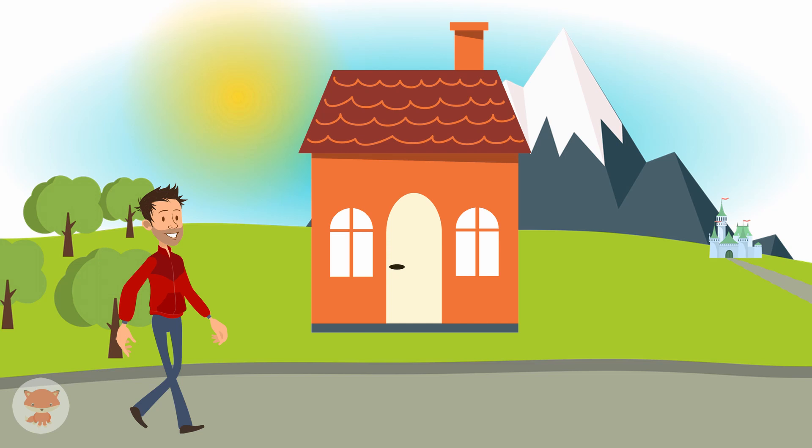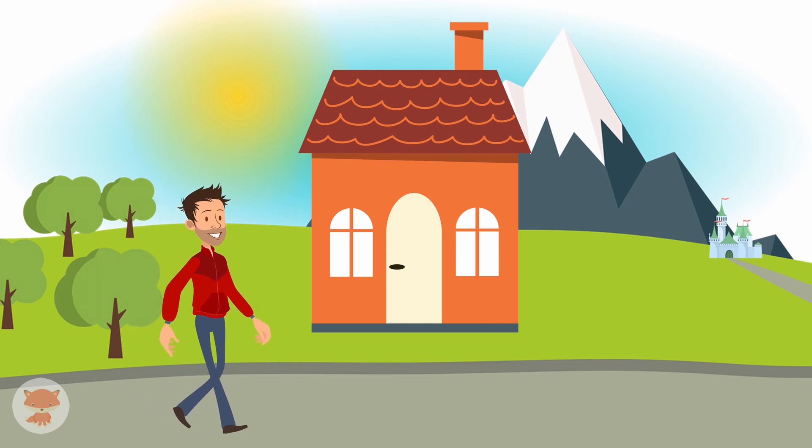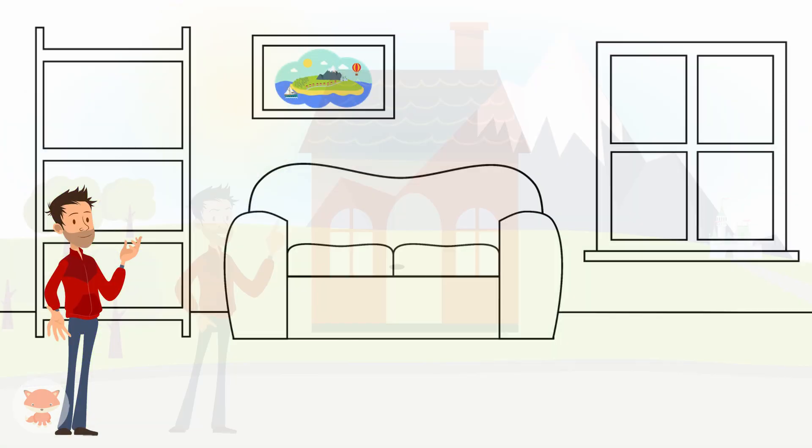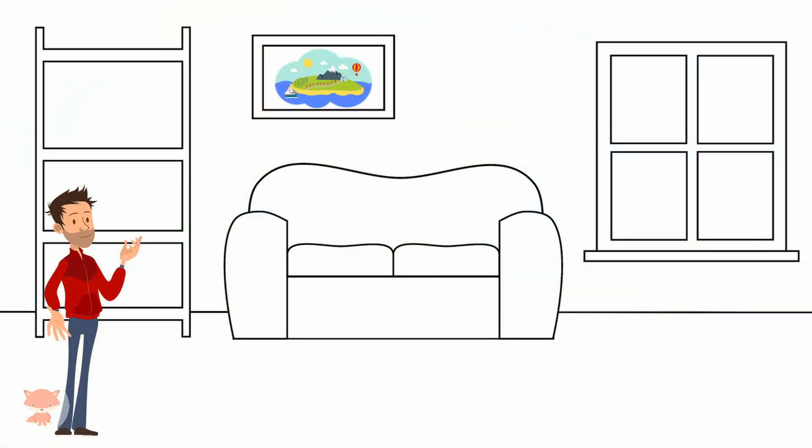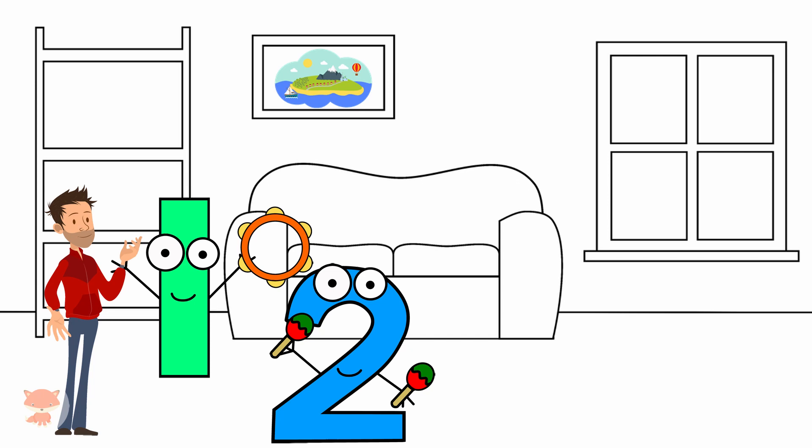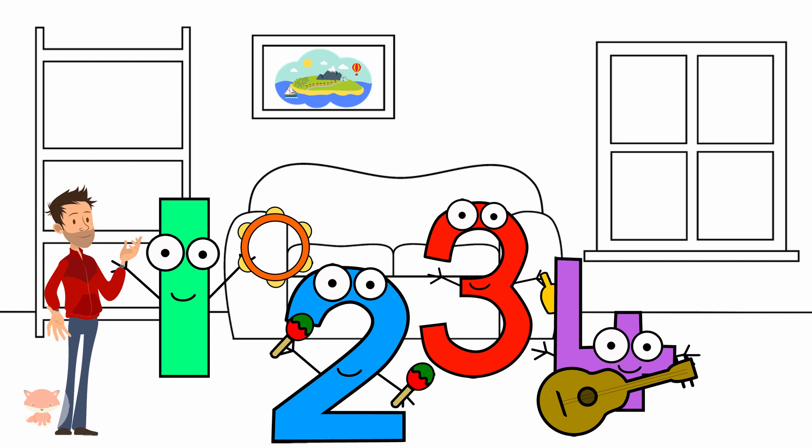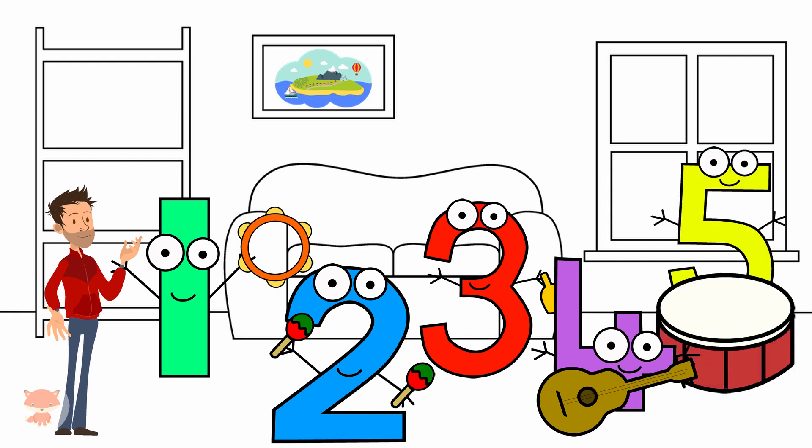Once upon a time in Numberland, I was walking down the street and I heard an awful ruckus coming from Number 5's house. I popped my head inside and I saw Number 1 with a tambourine, Number 2 with maracas, Number 3 with a bell, Number 4 with a guitar, and Number 5 with a very large drum.